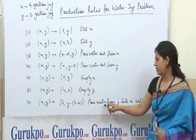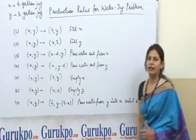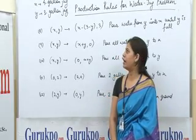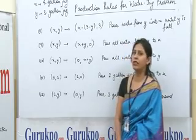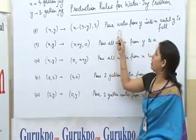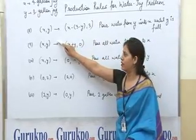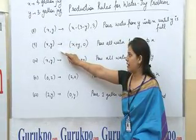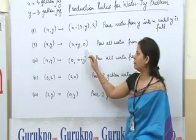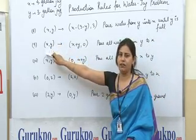This means we can pour water from Y into X until X is full. The eighth rule states that we can convert XY into X minus (3 minus Y), 3. This means we can pour water from Y into X jug until the Y jug is empty. The ninth rule states that we can convert XY status into X plus Y, 0. This means we can pour all the water from the Y jug into the X jug.